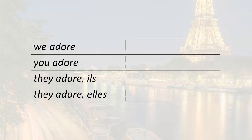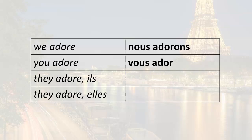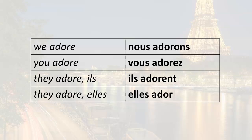So first of all, let's just review. We learned how to conjugate it — the plural forms. So nous: we add our ending, nous adorons. Vous: we add our ending to the root, vous adorez. They adore: ils adorent. And they adore: elles adorent. Remember to associate the subject pronoun and the endings when you memorize the endings.